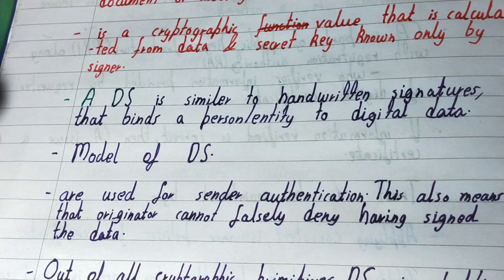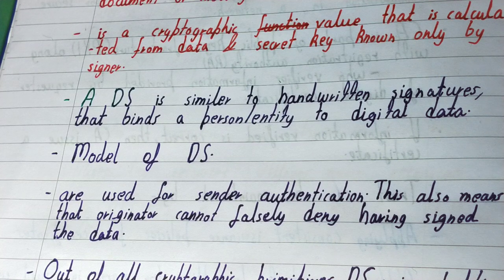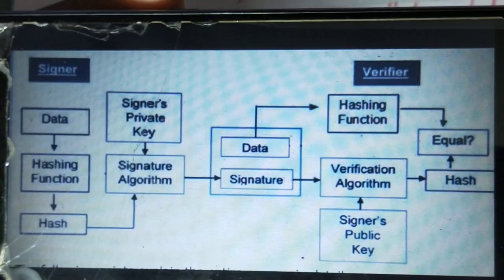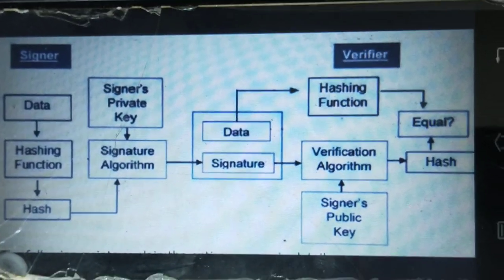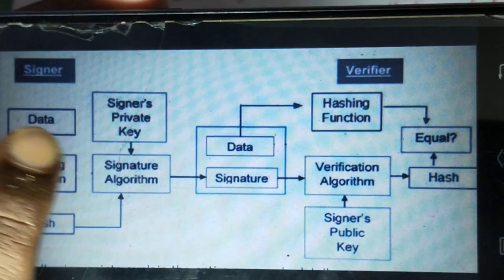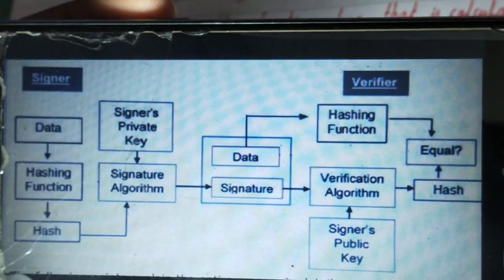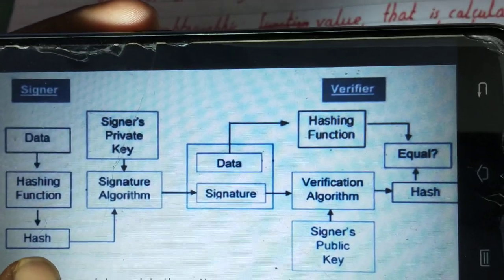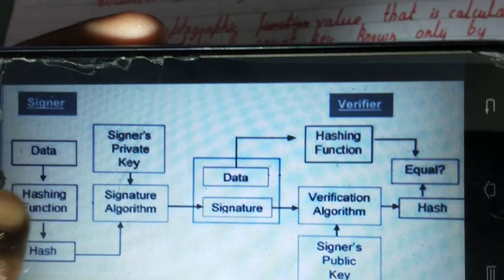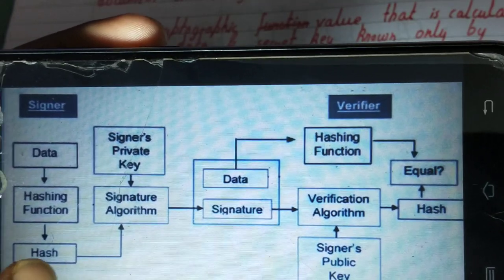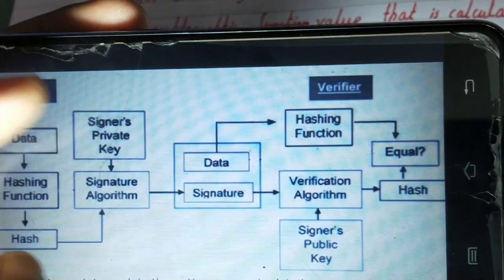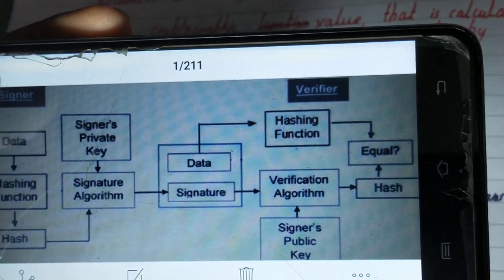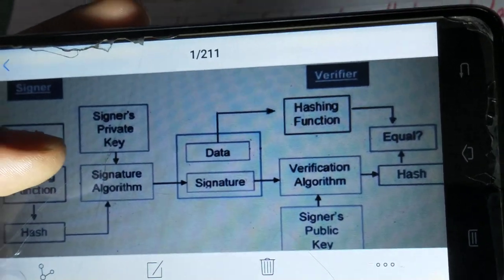Now let's talk about the model of a digital signature — the structure it follows. Here you can see the structure of a digital signature. The sensitive data that needs to be sent from a sender to a receiver is first converted to its hash value through a hashing function. This is the cryptographic value — from this hash you cannot regenerate the data, but from the data you can generate this hash value.